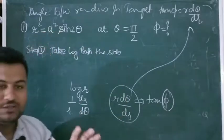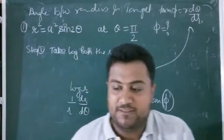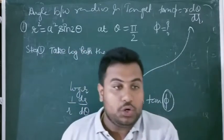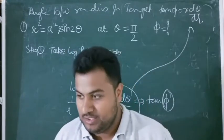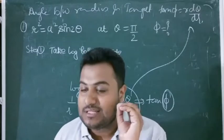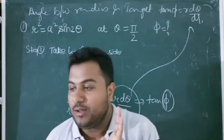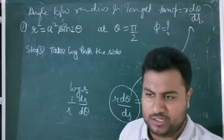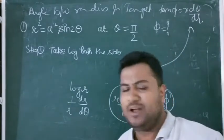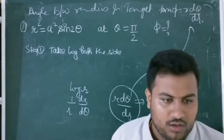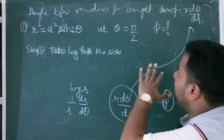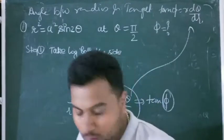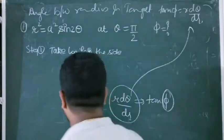Whenever you see a question on angle between the radius vector and tangent, or angle between two curves, or pedal equations, you have to use the same approach. Other methods involving direct differentiation are also correct — you just need to get this form — but my approach is taking log of both sides.